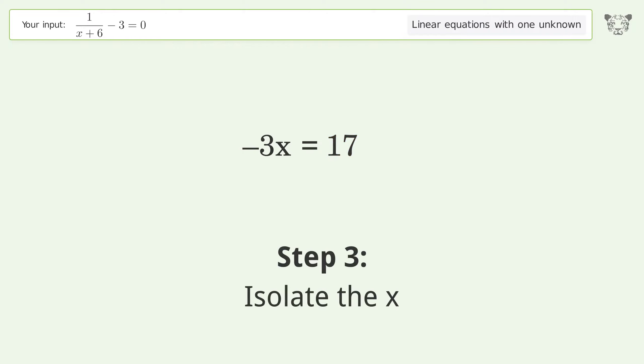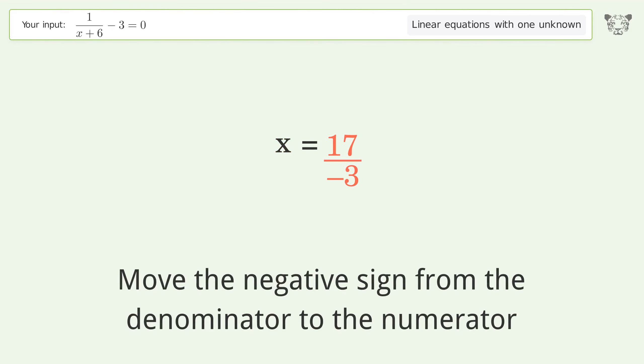Isolate the x. Divide both sides by negative 3. Cancel out the negatives. Simplify the fraction. Move the negative sign from the denominator to the numerator.